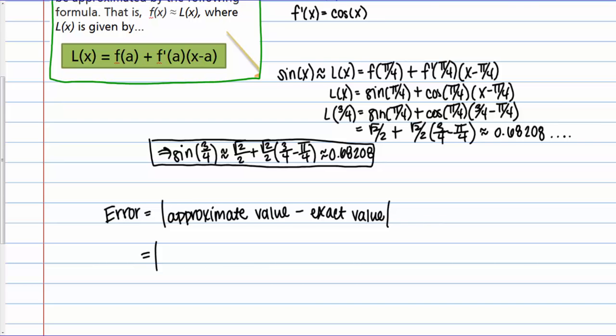So in our case our approximate value was this expression up here. This root 2 over 2 plus root 2 over 2 times the quantity 3 fourths minus pi over 4. And our exact value is just the sine of 3 fourths. So this expression here is going to give me the error of my approximation.